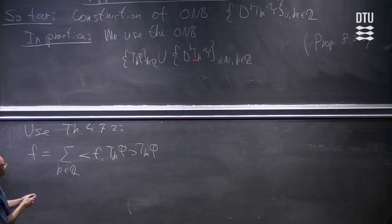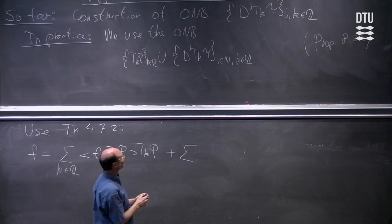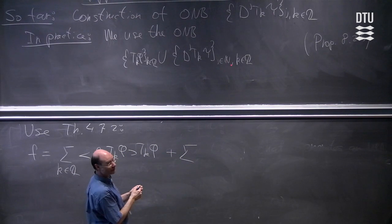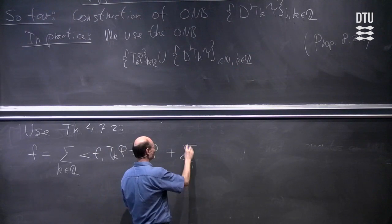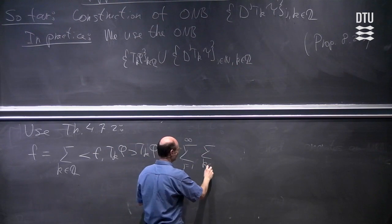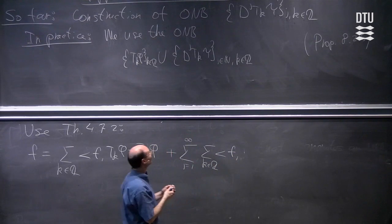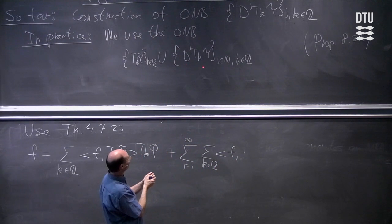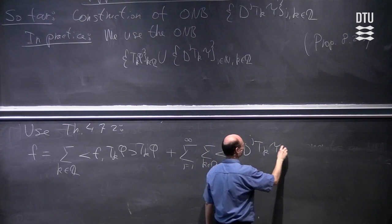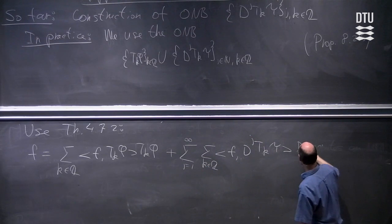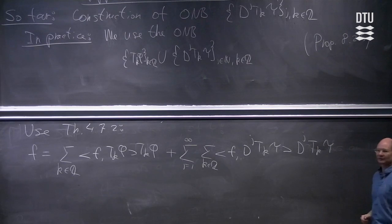The remaining elements give the sum over j in the natural numbers and k in the integers: the inner product between f and D^j T_k ψ, multiplied again with D^j T_k ψ. So this is the full expansion we get out.